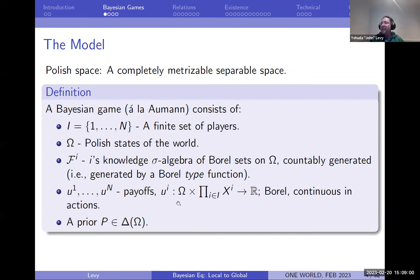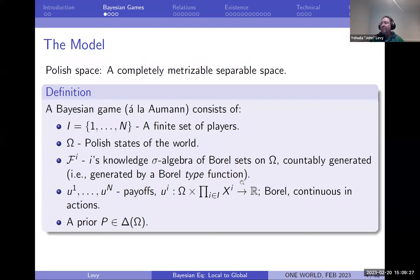Each player has an action space X_i, which we assume is Borel, and payoffs are continuous in each player's action — for fixed state of the world and fixed action profile of others, it's continuous. I'll have one slide later discussing what happens if you drop that continuity and just assume jointly Borel. We have a fixed prior over the set of states of the world. You can relax many of these assumptions — the state space can be locally compact separable, actions can depend on the state.